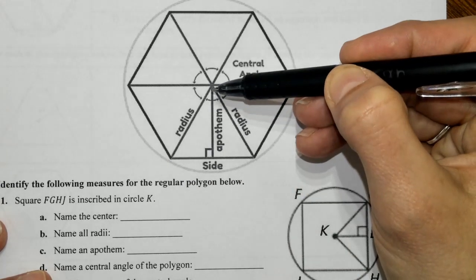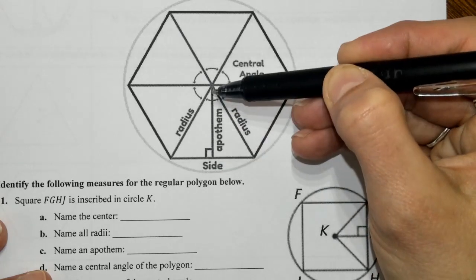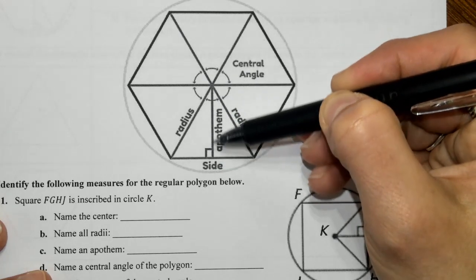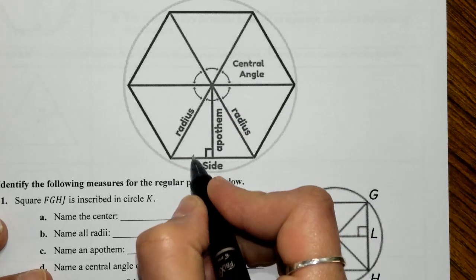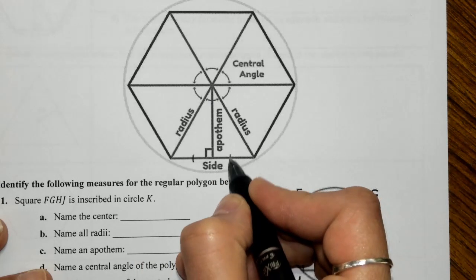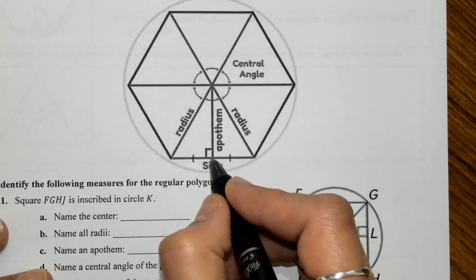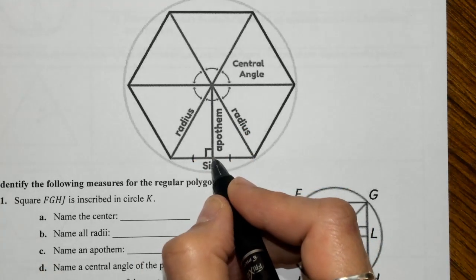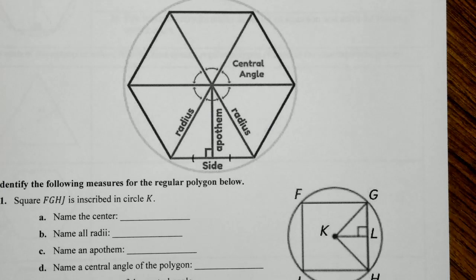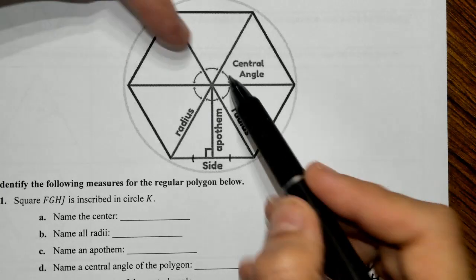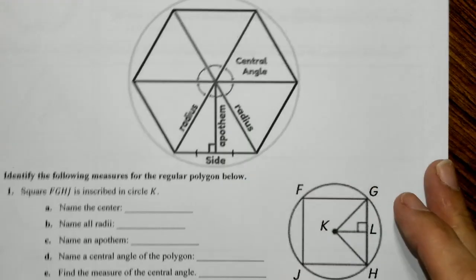Your apothem is not going to hit the circle. The apothem goes from the center and stops at the side, hitting the midpoint — so we actually have a perpendicular bisector. And then there's a central angle in here that we'll talk about in a little bit.